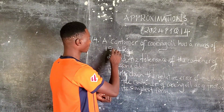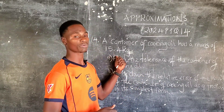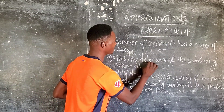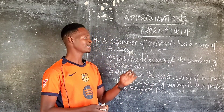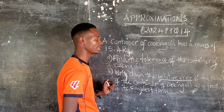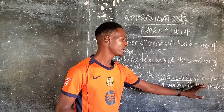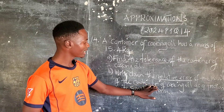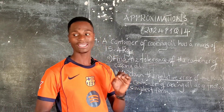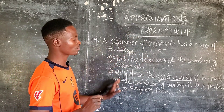Here is the question: a container of cooking oil has a mass of 15.4 kg. The first question is saying find the tolerance of the container of cooking oil. The second question is saying write down the relative error of the mass of the container of cooking oil as a fraction in its simplest form.